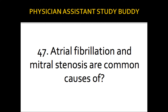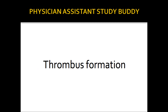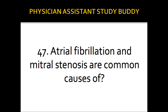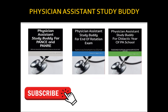Atrial fibrillation and mitral stenosis are common causes of thrombus formation. If a question mentions murmurs and thrombus formation, think AFib and mitral stenosis. That brings us to the end of this slideshow on murmurs — I hope you found it helpful.